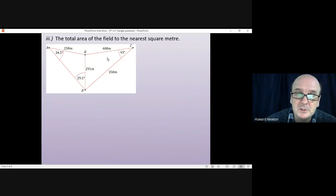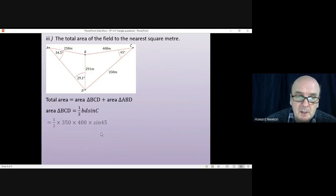The area formula requires us to know two sides and the included angle, and we know this side, we know this side, and we know the angle where they meet. So we can work out the area of triangle BCD, which is ½bd·sin(C). Those three things we know all of them. So we've got ½ × 350 × 400 × sin(45). Put that in the calculator and you get about 49,497.